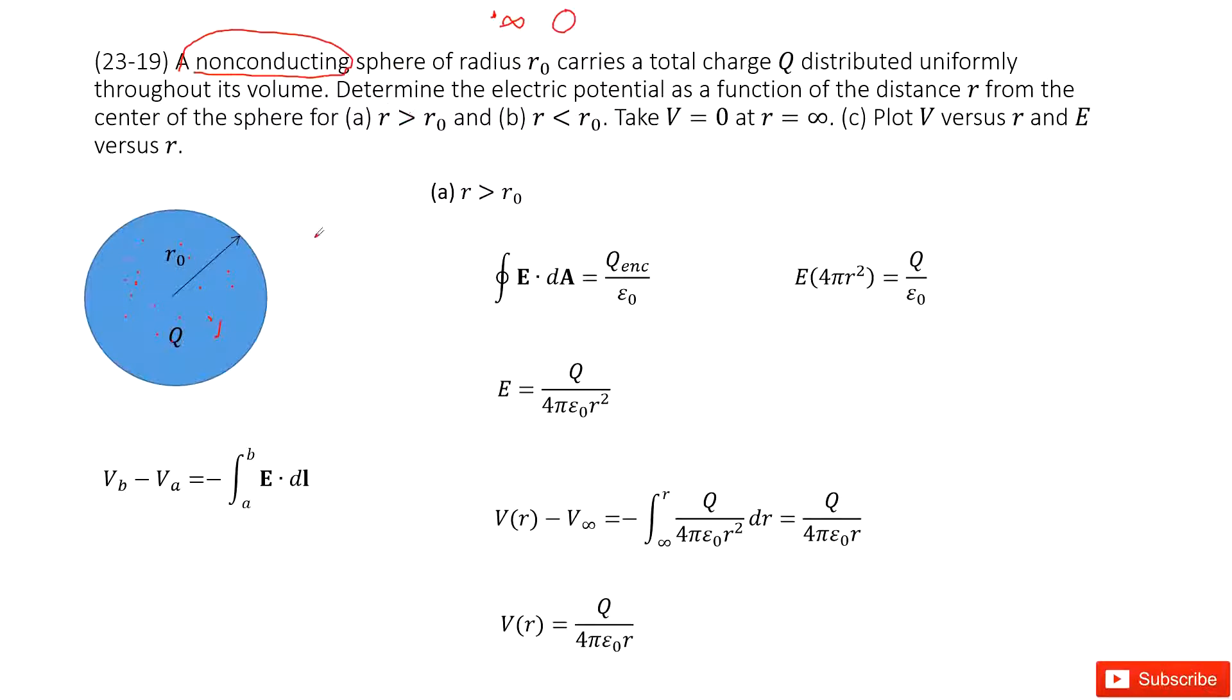So first case: r is larger than r0. If we want to use this function, it looks like we must find the electric field at this location. As we can see, this spherical object carries a positive charge. So E is pointing outward, or radially outward.